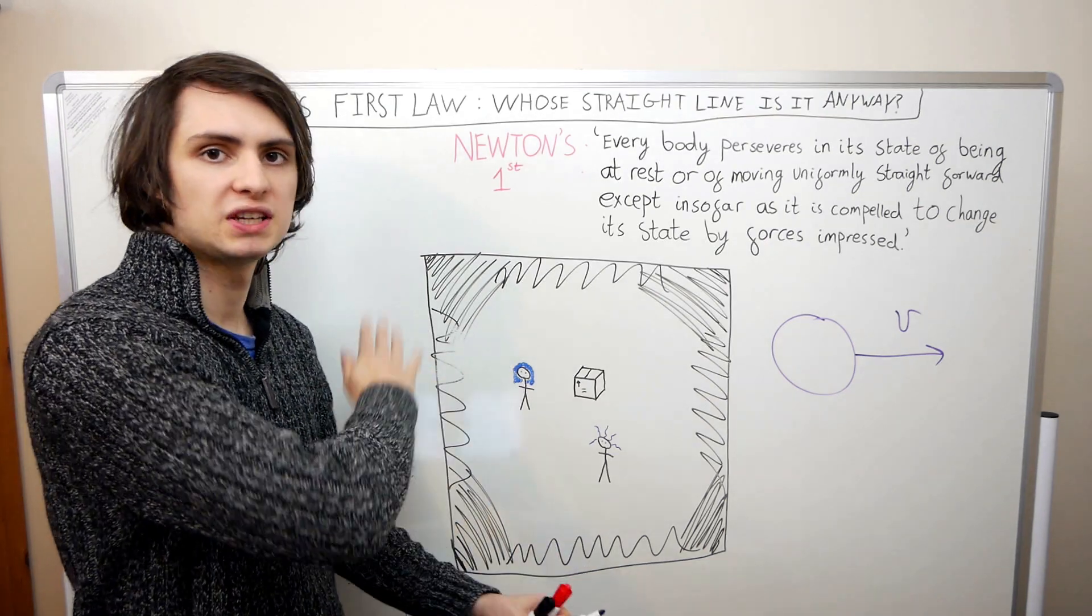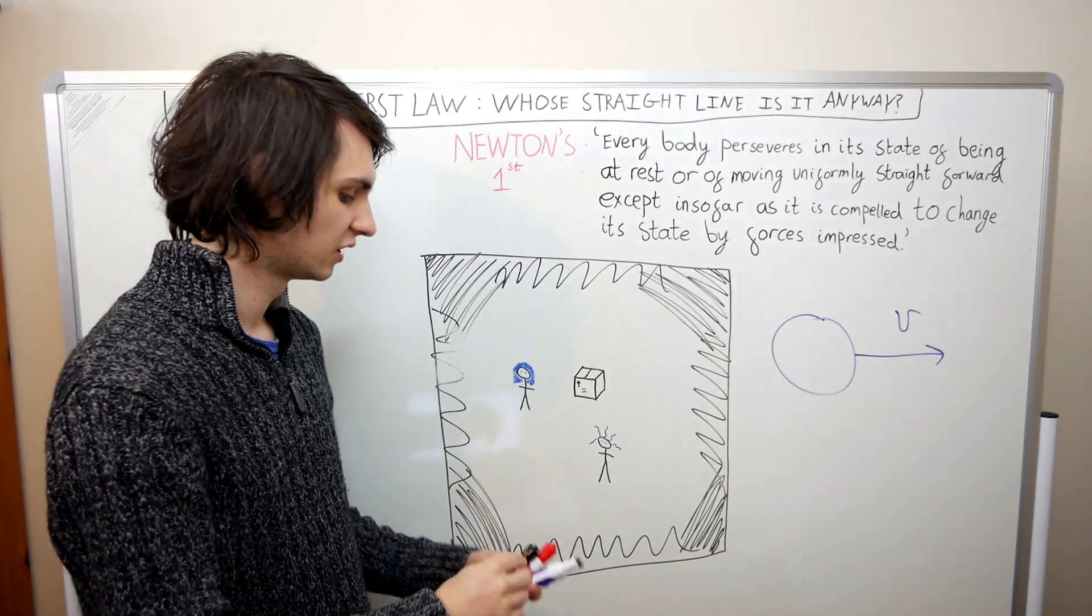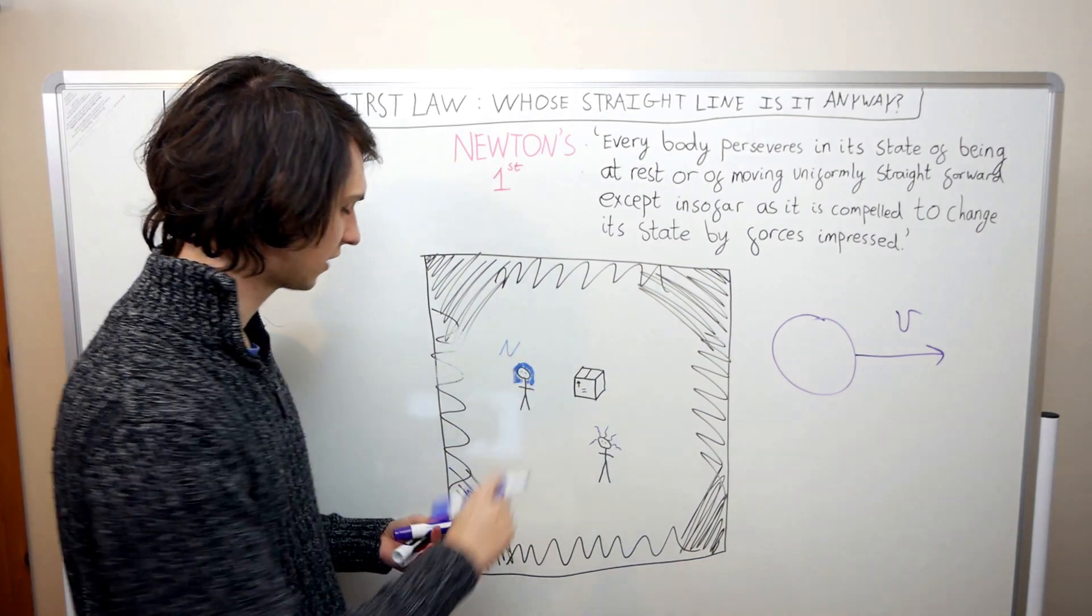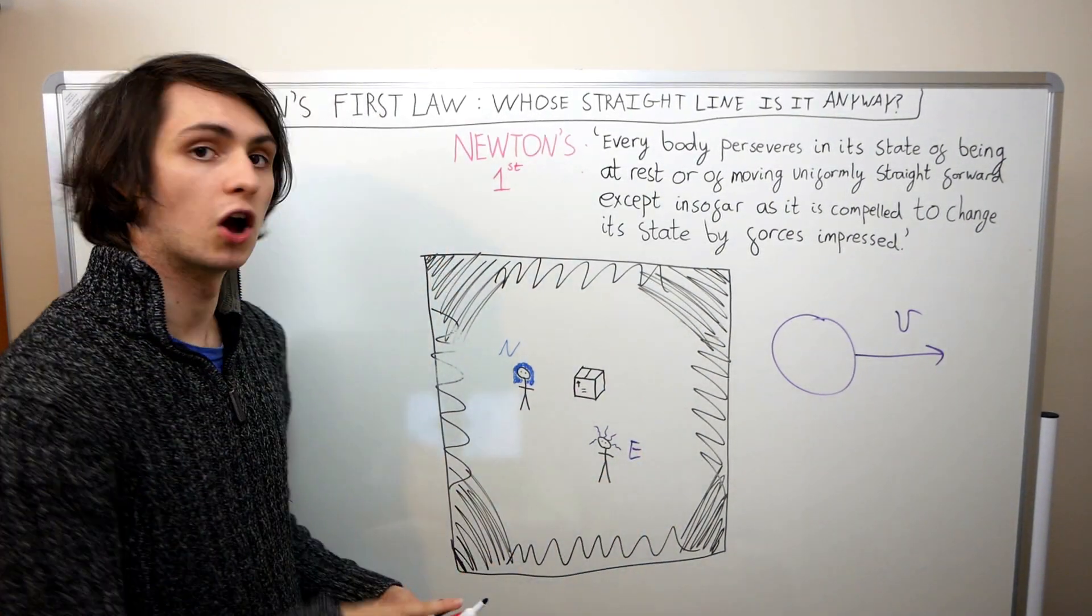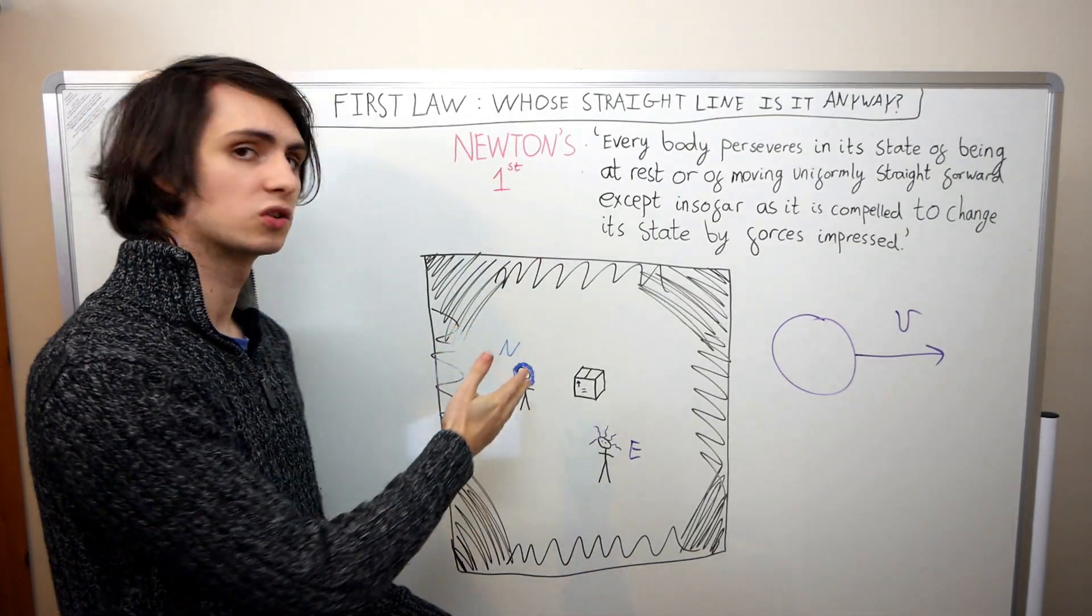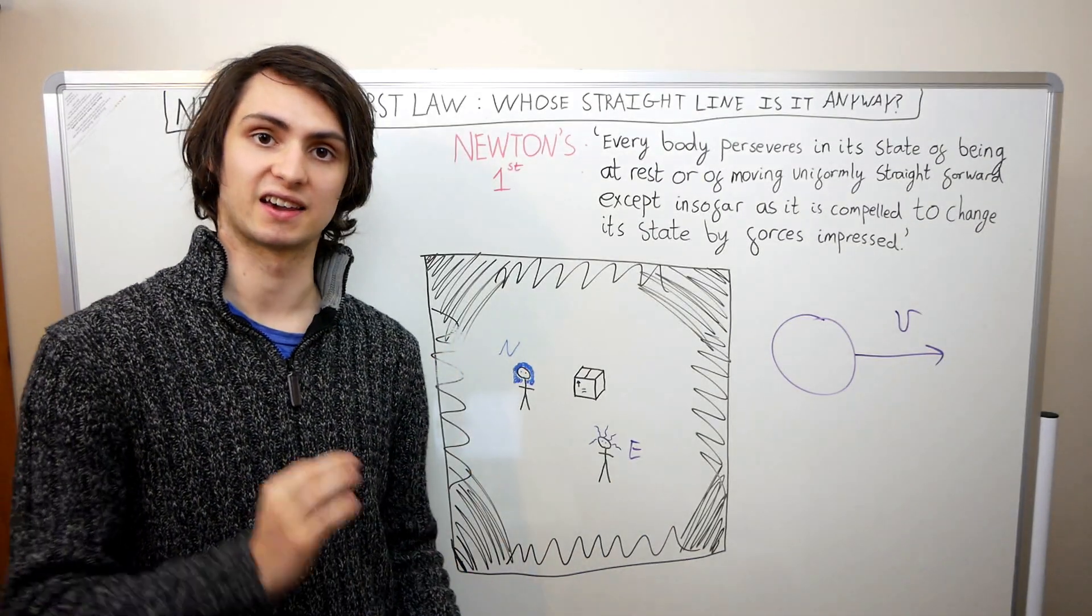Let's pretend we're in deep space and all that we have with us is Newton, who's here (N), and Einstein, who's down here (E). And the only other thing that's near them is a box, which definitely doesn't contain a cat.